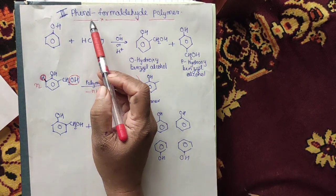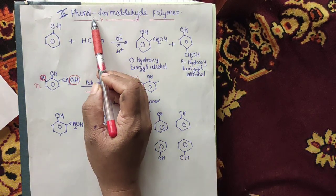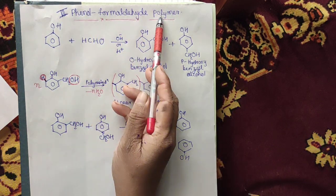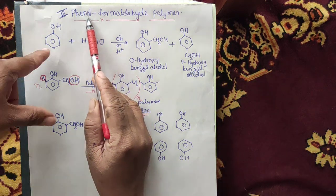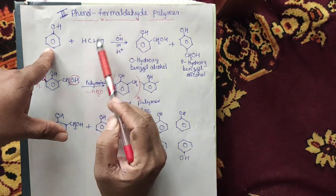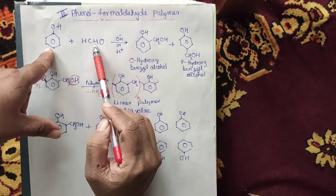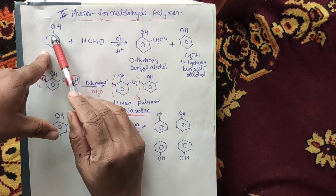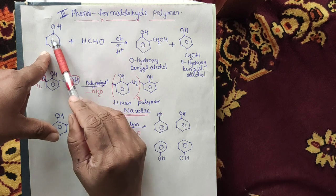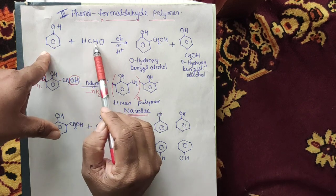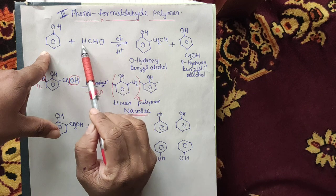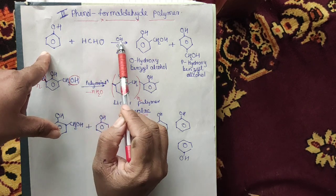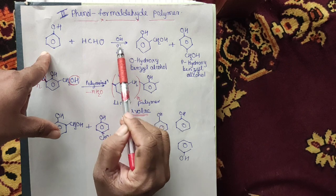The next category in condensation polymers is phenol-formaldehyde polymers. As the name suggests, phenol and formaldehyde are the two monomers used. Phenol has one OH group on a benzene ring, and formaldehyde is a one-carbon aldehyde. In the presence of acid or base, these two undergo a reaction.